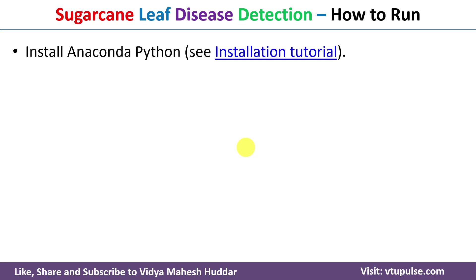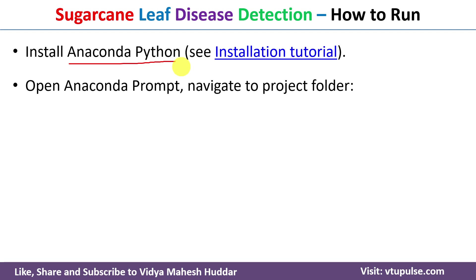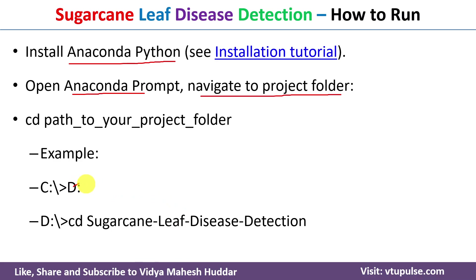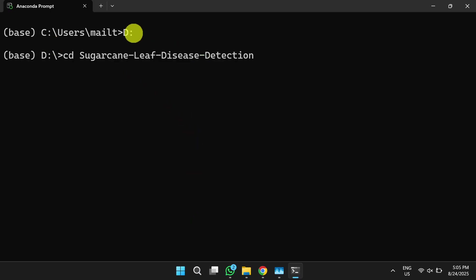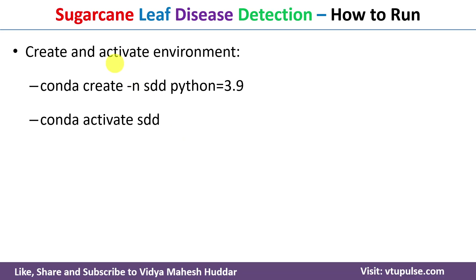Now we will discuss how to run this model. First, install the Anaconda Python app — a previous video on how to install it is linked in the description below. After installing Anaconda, open the Anaconda prompt and navigate to the project folder. In this case, the project is saved in the D drive, so navigate using 'd:' and then 'cd' followed by the project folder name.